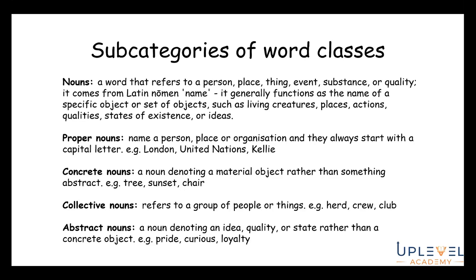There's a useful test called the box test. If I ask 'can you give me a box of muffins?' — muffins is a concrete noun because it's something physical you can put in a box. But if I ask 'can you give me a box of loyalty?' — you couldn't. That's how we can distinguish between a concrete noun and an abstract noun.